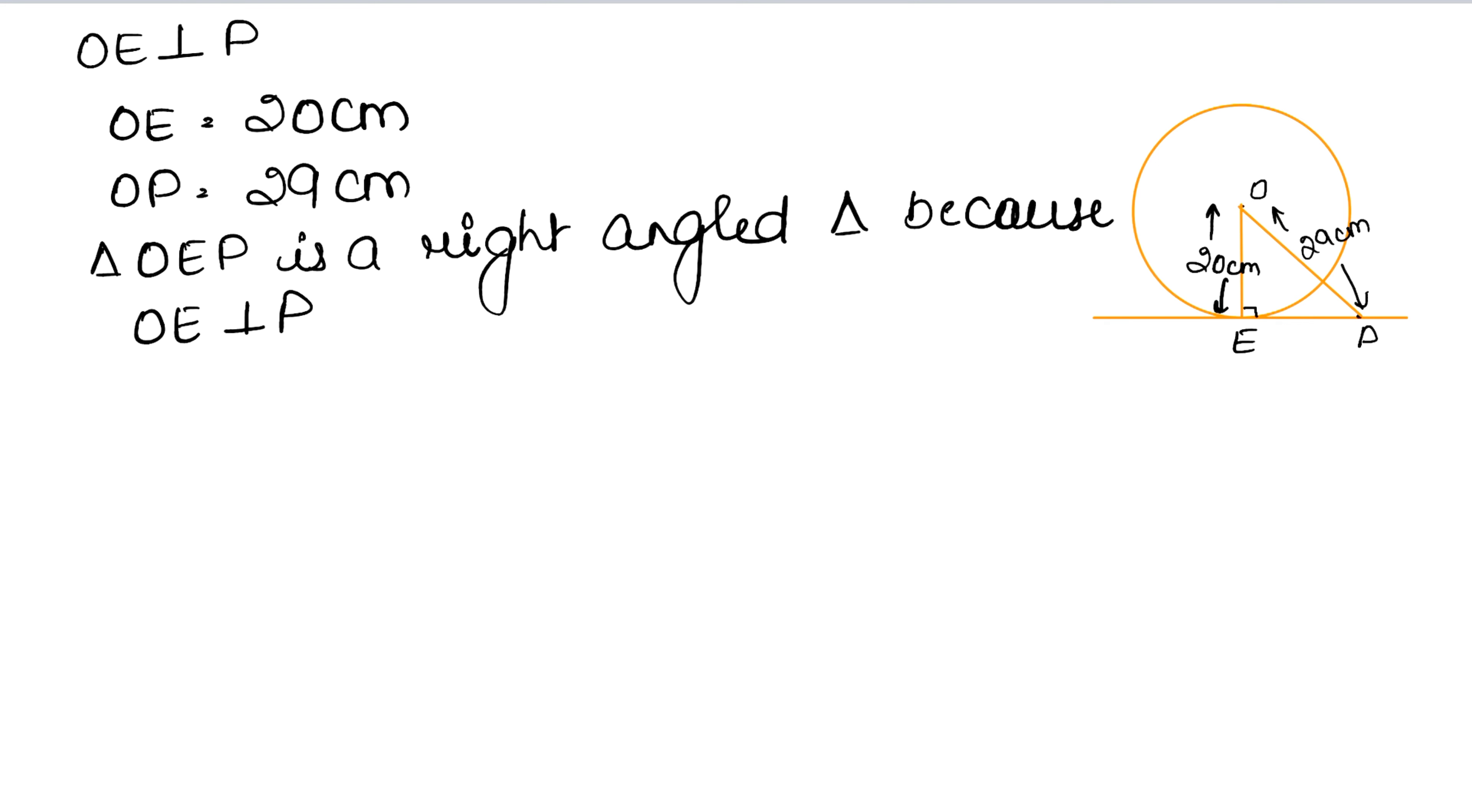So by using, when we have a right angle triangle, we use Pythagoras theorem. We can find that tangent length using the Pythagorean theorem.